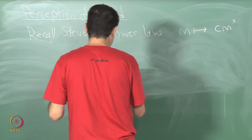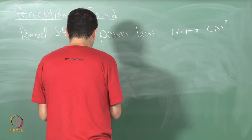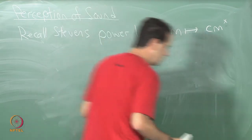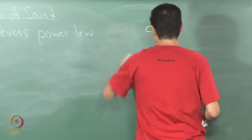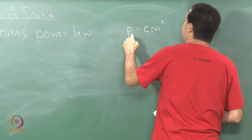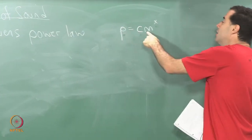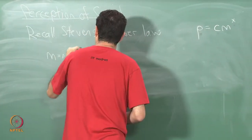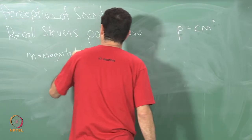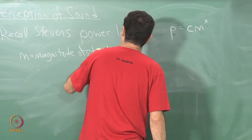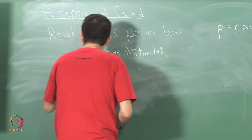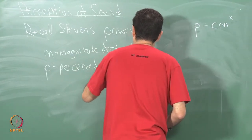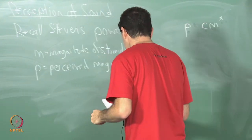Let me make sure I get that. Sorry, let me change that just a little bit. Let's say P, the perceived magnitude of the stimulus, is some constant times the magnitude, and there is some exponent there. M is the magnitude of stimulus and P is the perceived magnitude.